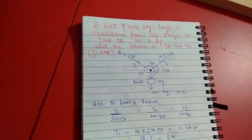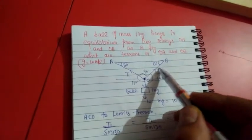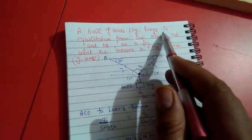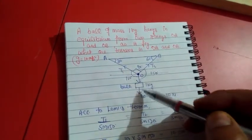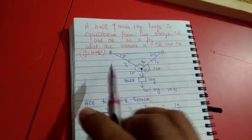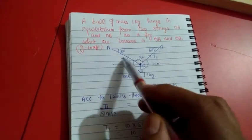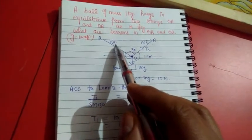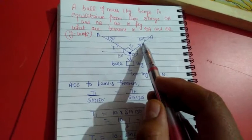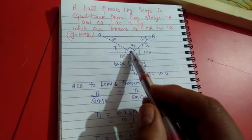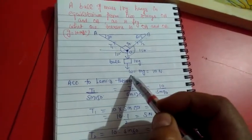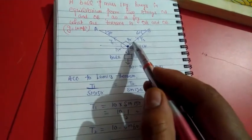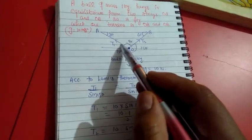We will discuss another numerical problem regarding Lami's theorem — the motion of concurrent or equilibrium forces. A ball of mass 1 kg hangs in equilibrium from two strings OA and OB. We have to find the tensions T1 and T2 in strings OA and OB, given g = 10 m/s². The angle at A is 30°, angle at B is 60°, and angle at O is 90°. Applying Lami's theorem, the three forces are T1, T2, and the weight of the ball acting downward.